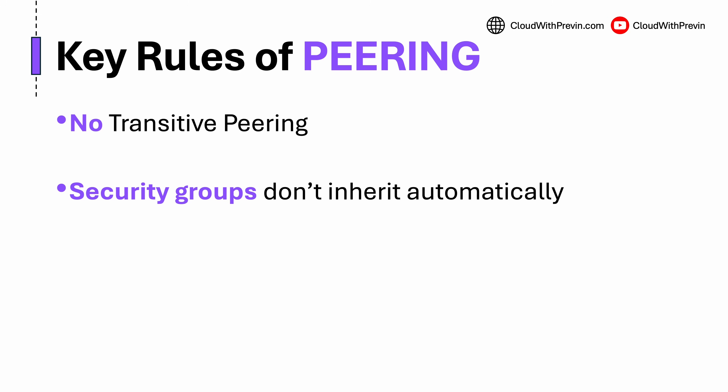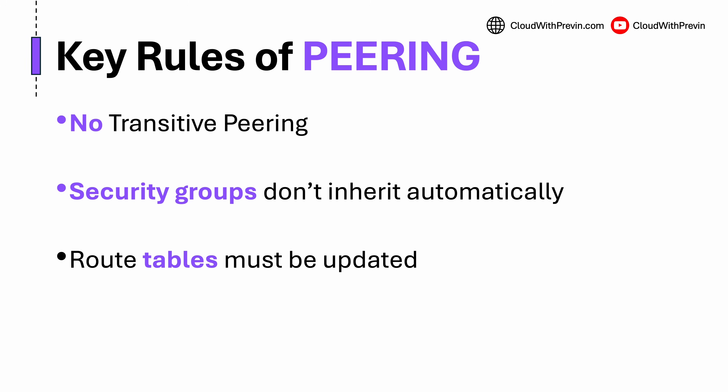Next, just because the VPCs are connected, it does not mean that your EC2 instances can talk yet. Security groups don't automatically allow traffic from peered VPCs — you have to manually allow the CIDR block of the other VPC in your inbound rules. The third rule: you have to update your route tables. Each VPC must know that if you are trying to reach that CIDR block, send it through this VPC peering connection. Without this, the traffic has no path.